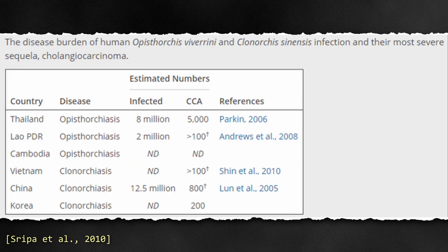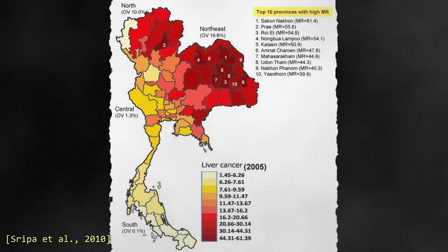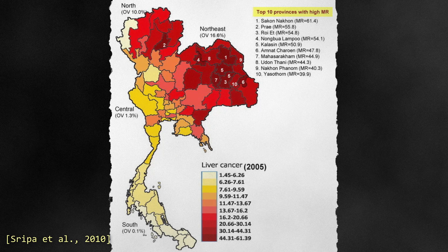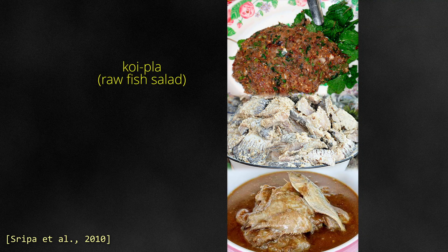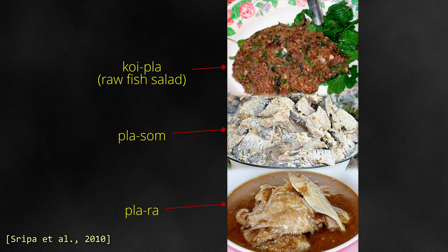This cancer is of public health significance, particularly in regions where these flukes are highly endemic. Northeastern Thailand continues to report the highest rates of cholangiocarcinoma, largely attributed to the widespread consumption of raw fish contaminated with these liver flukes. In Thailand, the most common delicacies involving these raw fishes include koi pla, or raw fish salad, pla som, and pla ra, both of which are types of fermented fish.